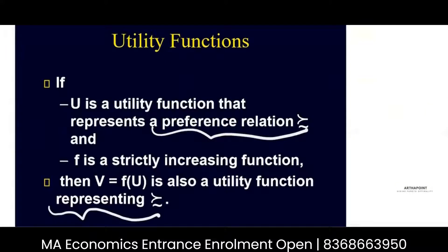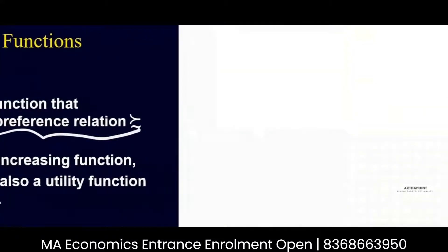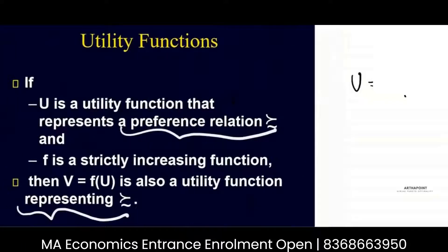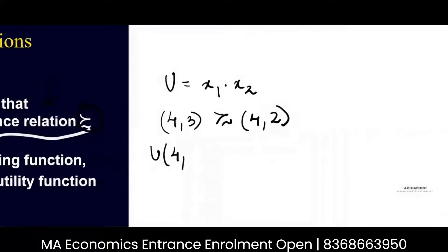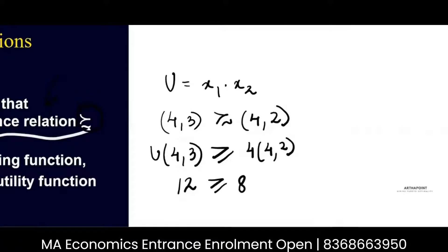Just try and understand this. Suppose I have a utility function x1 times x2, and this utility function goes with this preference relation. If I say that the bundle (4, 3) is as good as the bundle (4, 2), the utility from (4, 3) should be greater than or equal to the utility from (4, 2). So the utility here is 12, which is greater than or equal to 8. It satisfies this preference.